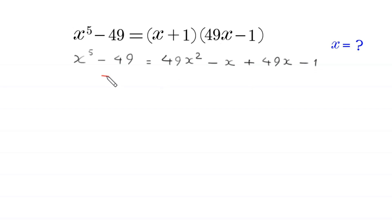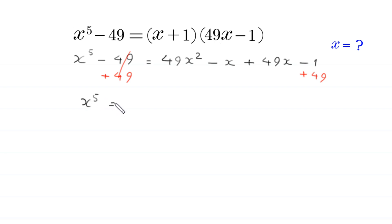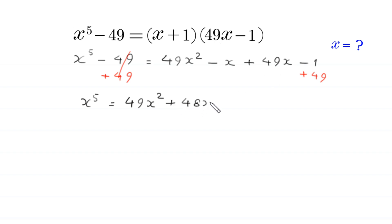Now we add 49 to both sides. The negative 49 gets cancelled, and on the left hand side we are left with x to the power 5 is equal to 49x squared. Negative x plus 49x will become plus 48x. And negative 1 plus 49 is plus 48.